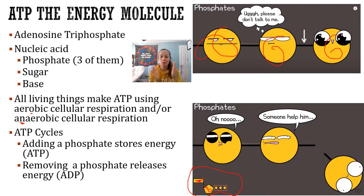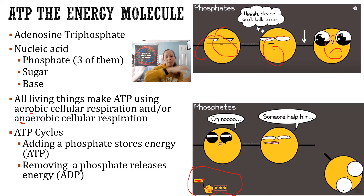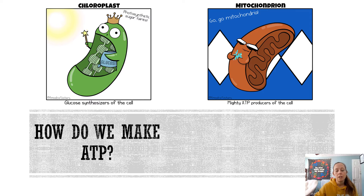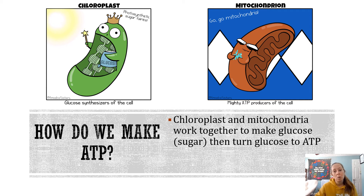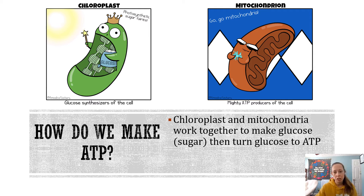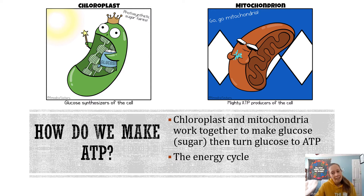ATP in general is going to cycle. You can remove or add phosphates to it. When you add a phosphate, it stores energy, and when you remove a phosphate, it releases energy. So you store it by adding the phosphate, and then when you cut the phosphate off, it releases energy. Chloroplasts and mitochondria work together to first make glucose and then turn glucose into ATP. Glucose is just a sugar.